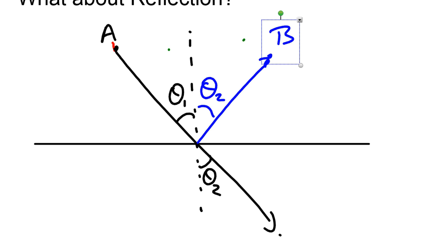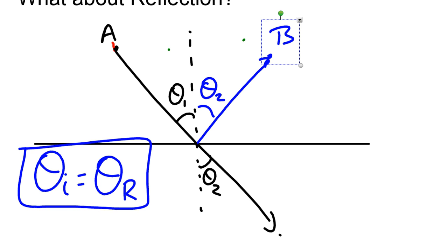Really, using Fermat's principle of least time, we can say the following: that whatever the incident angle is, which I call theta i, is going to be the exact same angle as the reflected angle. And that is the law of reflection.